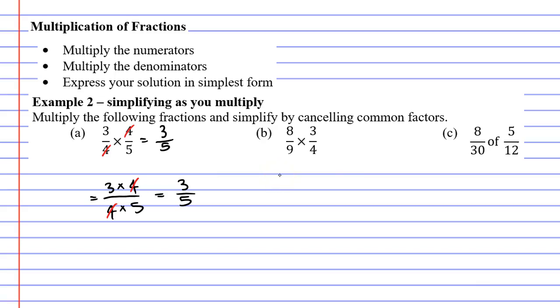Moving now on to question B. If I multiply my numerators, I get 8 times 3. And when I multiply my denominators, I get 9 times 4. Now when you look at this, we can't see any common factors.